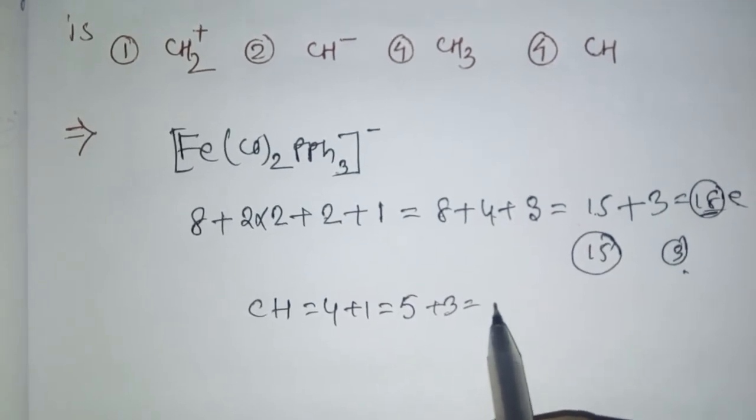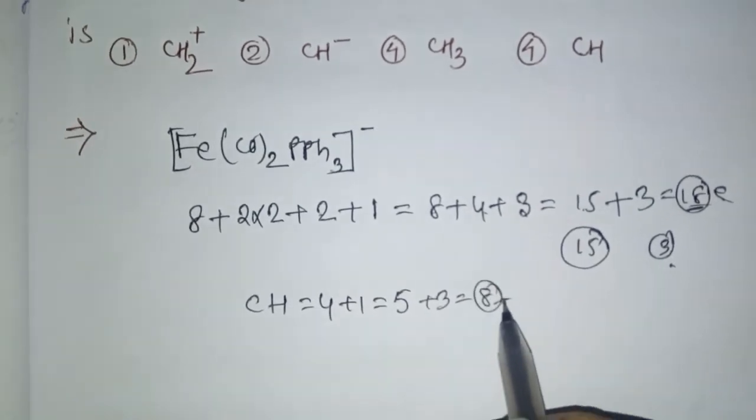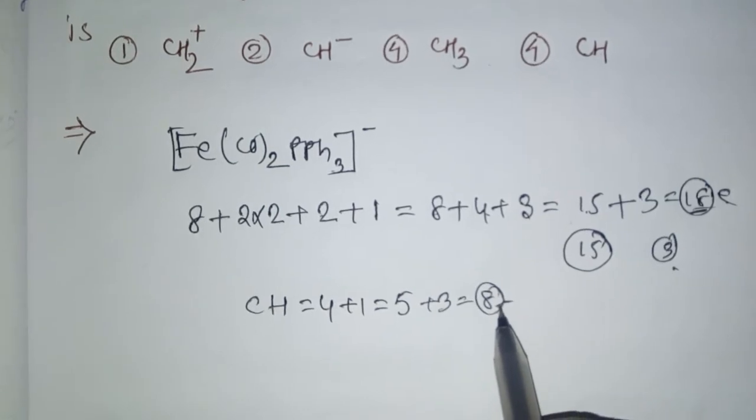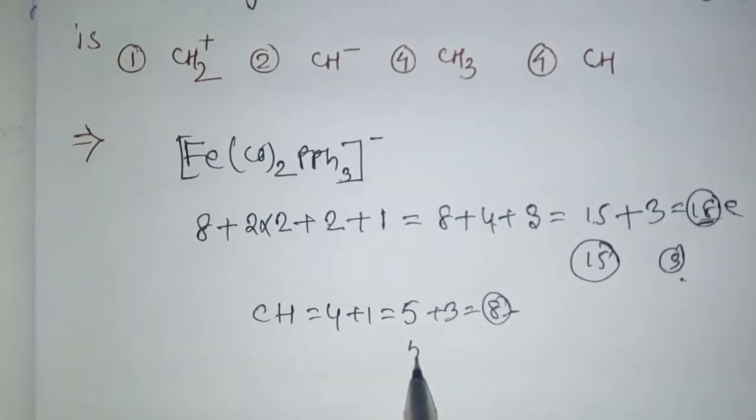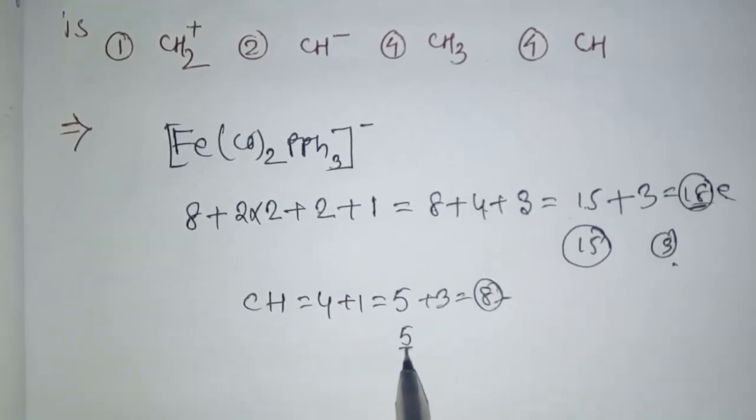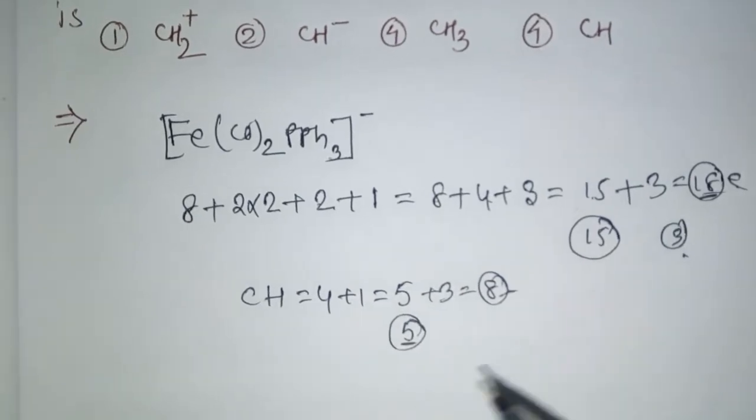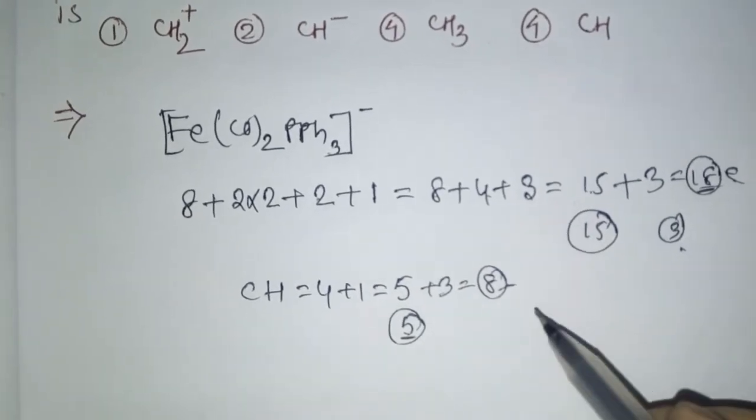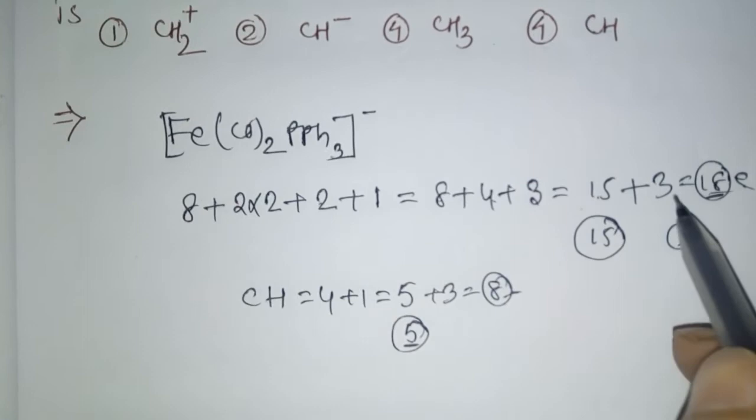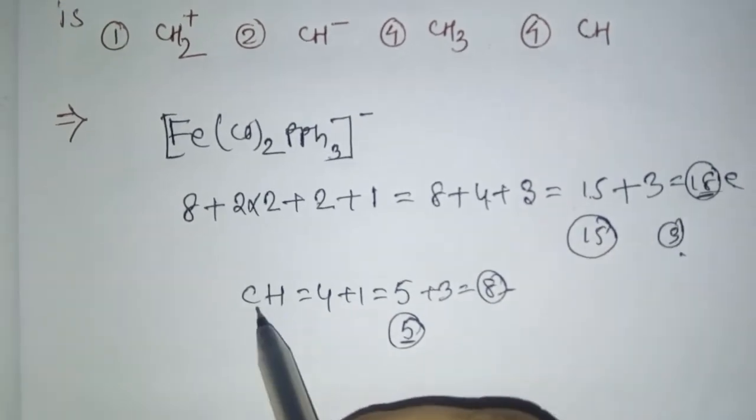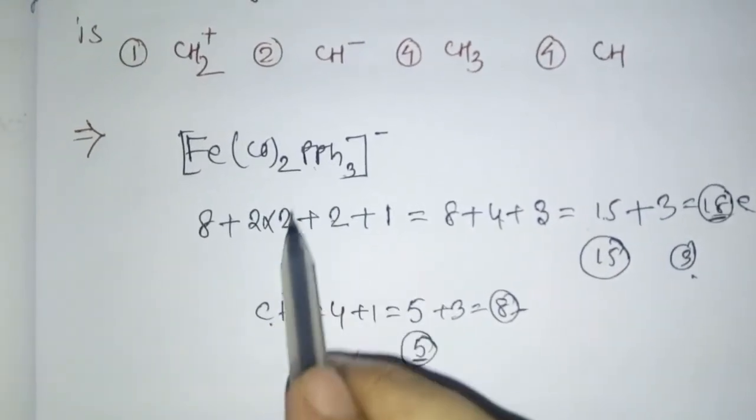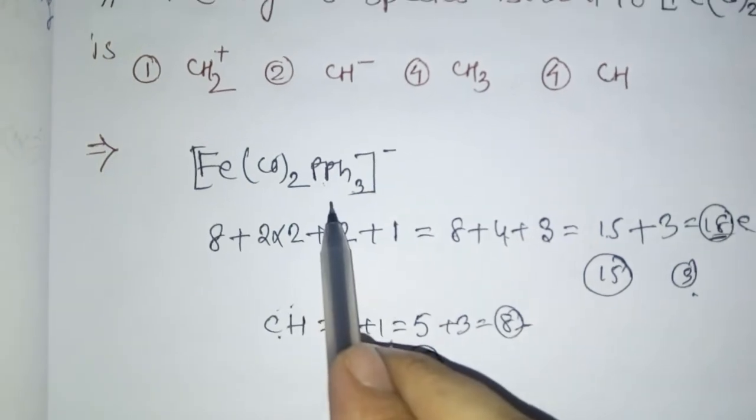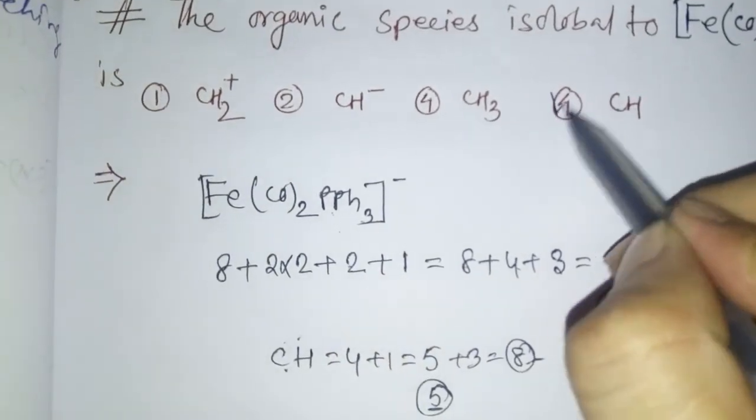This is a main group compound. For the octet rule, how many are needed? 3 more are needed, meaning 8 total for a stable octet. So here we have 5, which means 3 electrons are needed for stability. This matches our transition metal requirement of 3, so this one and that one are isolable. Your correct option is CH.